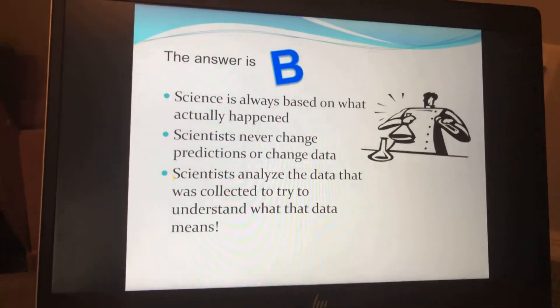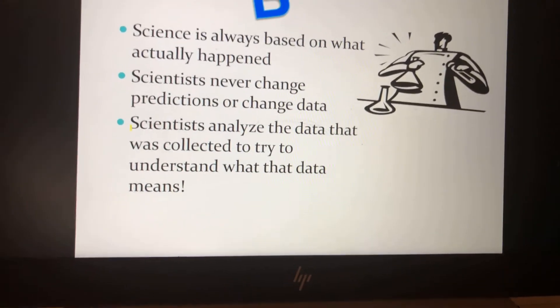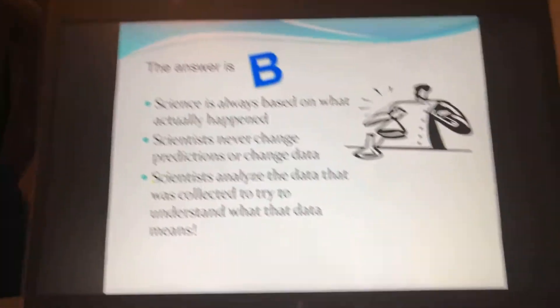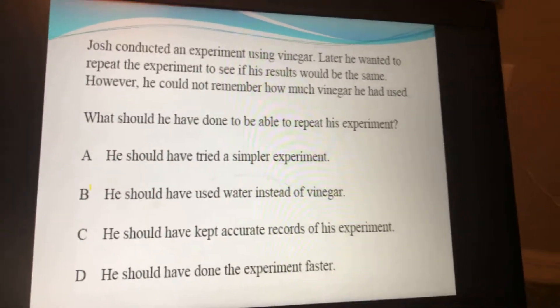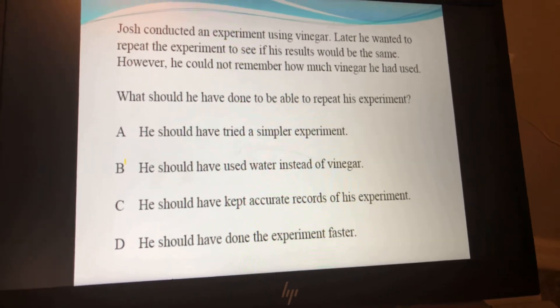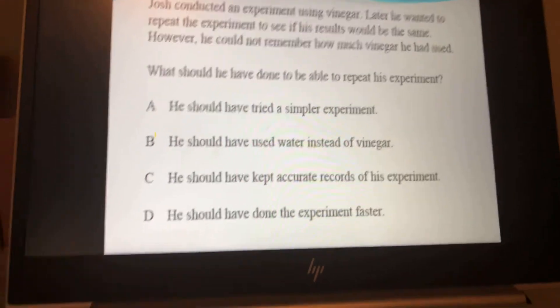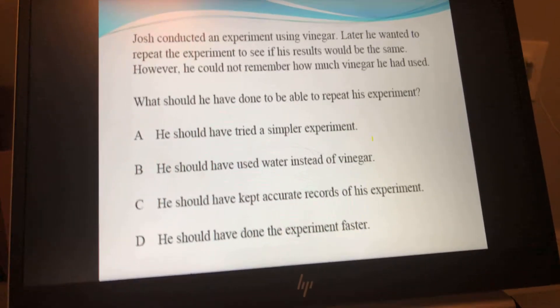The only thing that makes sense is for Emma to analyze the data she has, so she can start drawing a conclusion and thinking about why her experiment went the way it did. The answer is B. Science is always based on what actually happened — scientists never change their predictions or their data. You analyze the data collected to try to understand what it means and figure out why things happened.